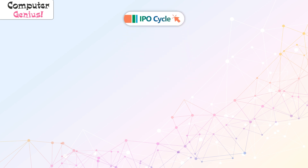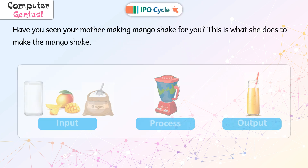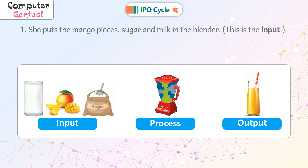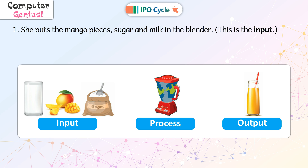IPO cycle. Have you seen your mother making mango shake for you? This is what she does to make the mango shake. She puts the mango pieces, sugar and milk in the blender. This is the input.